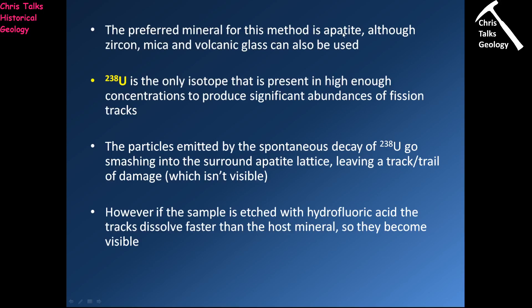Apatite is preferred because it is a relatively common mineral found in many igneous rocks and is easy to work with. Apatite, zircon, mica, and similar minerals typically contain radioactive isotopes, and uranium-238 is the one we're particularly interested in because it's present in quite high concentrations, producing lots of damage from alpha decays as the uranium-238 breaks down.